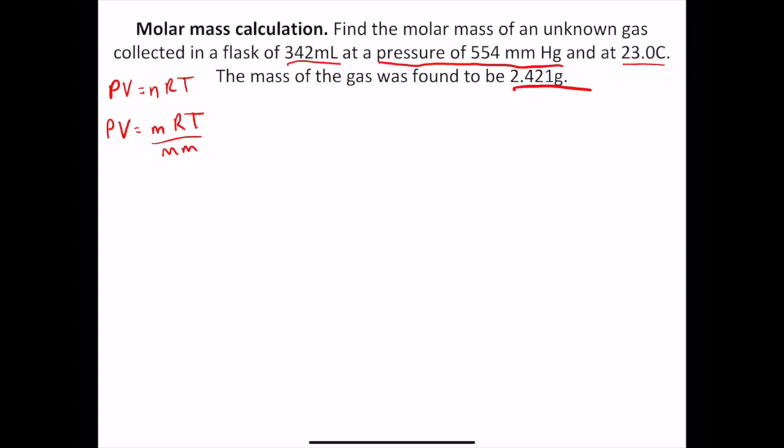And let's kind of talk about it. So do we have a pressure? Yeah, it's 554 millimeters mercury. Do we have a volume? Yep, 342 milliliters. Do we have a mass? Yes, they gave us a mass. R, we always know. Temperature? Yep. And then what we're looking for is the molar mass. So we're actually trying to find this mm at the bottom here. So if you want to, you can rearrange this equation first, and then you can plug in the numbers.